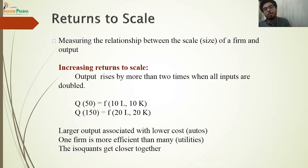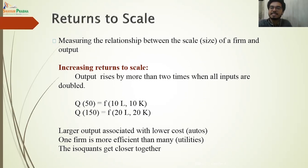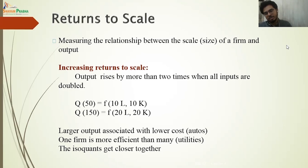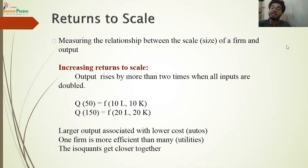Now we will discuss about returns to scale. Returns to scale is when we measure the scale of production — the total number of labor and capital recruited — and its impact on total output. There are three types of returns to scale: increasing returns to scale, decreasing returns to scale, and constant returns to scale.